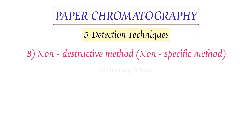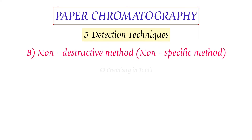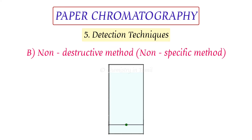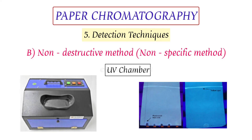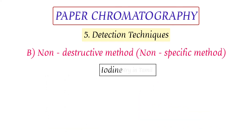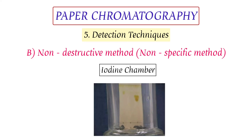The non-destructive method is a non-specific method — we do not spray any degrading reagents. Instead, we take the dried paper and examine it under UV chambers. Under short UV and long UV light, we can see the bands that are separated. For example, if there are four bands, there are four compounds present. Iodine crystals can also be used for identification.